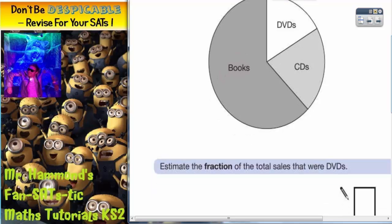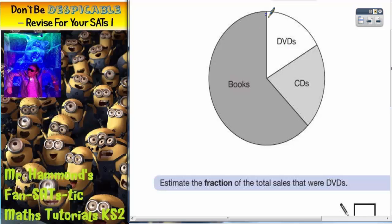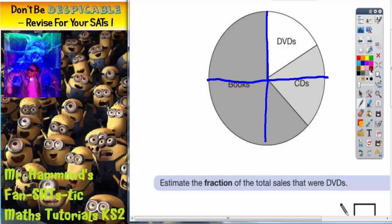So we're interested in DVDs so far. Right, now let's have a look. If we try splitting it into quarters, which would be a nice easy fraction to do, you can see that actually DVDs is quite a bit less than a quarter. So it's probably not going to be a quarter that they're looking for.